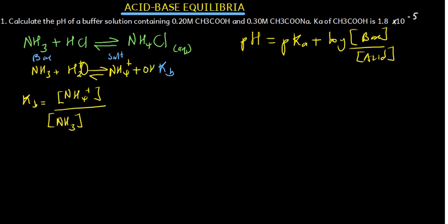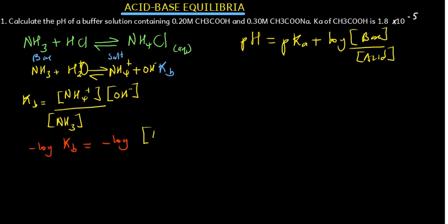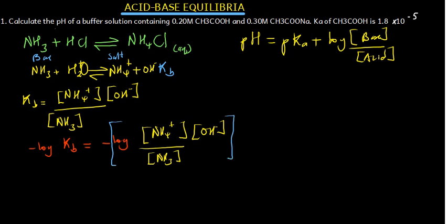So the Kb expression uses just the hydroxide on the product side. Now I'm going to introduce negative log on both sides: negative log of Kb on the left, and negative log of [NH4⁺][OH⁻]/[NH3] on the right. What is negative log of Kb? That is pKb.